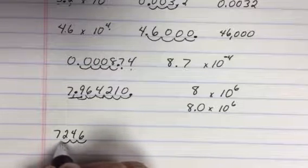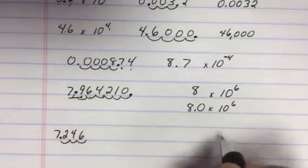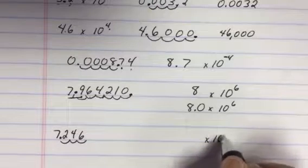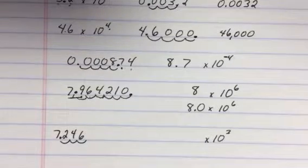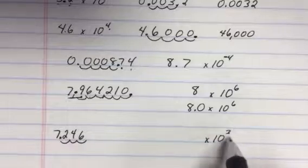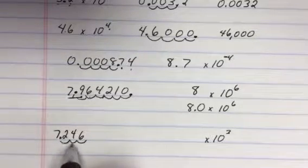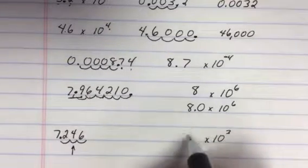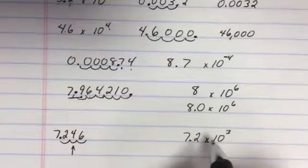One, two, three. Move it in. So I have times 10 to the third. Making a big number smaller makes it a positive. I look at this number. The two does not round up. So it stays 7.2.